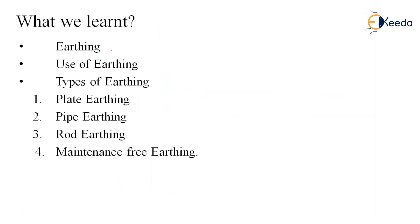To summarize: earthing means connecting all the appliances to the earth, to overcome the earth fault. Earth fault is when a live wire touches the metallic part of your appliance, which may lead to shock to the user. To avoid the shock, the return current that has entered the appliance body is directed to the earth through earthing. The uses of earthing are: to protect the device, to protect the system, to protect the user, and to avoid the risk of fire in the building.